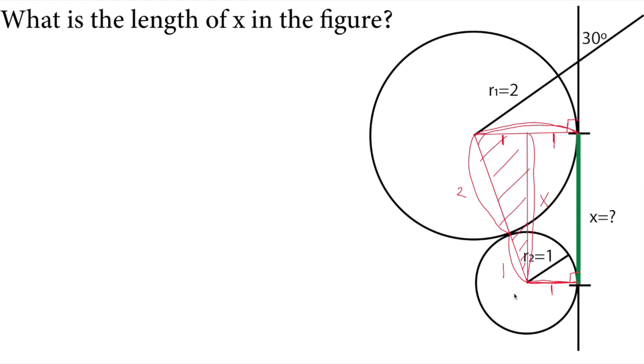So for this triangle, we can apply the Pythagorean theorem. The sum of the squares of the perpendicular lines equals the square of the hypotenuse.